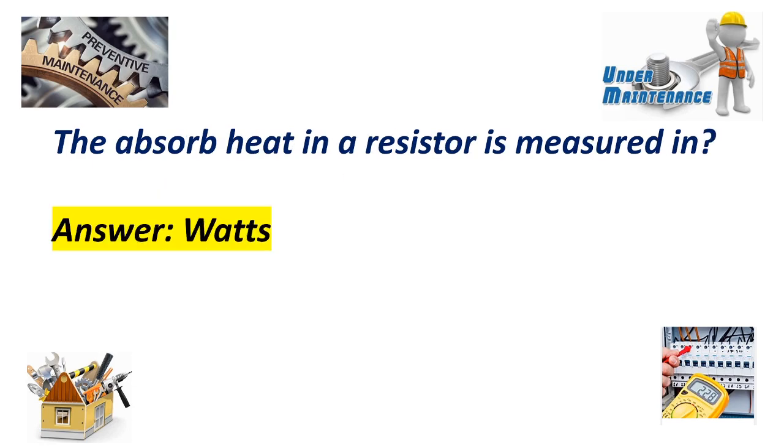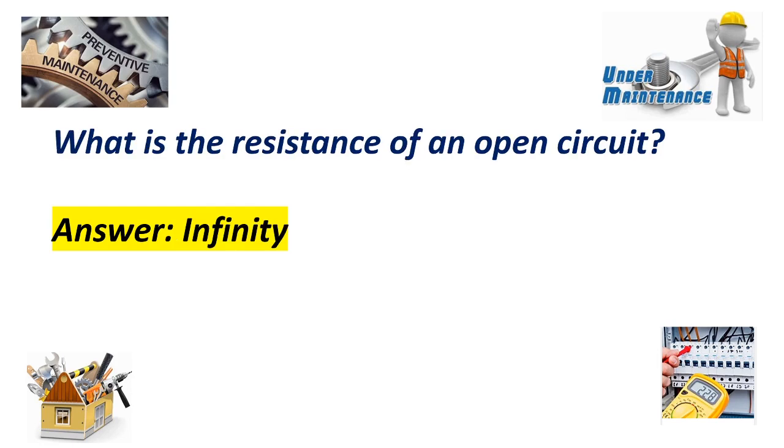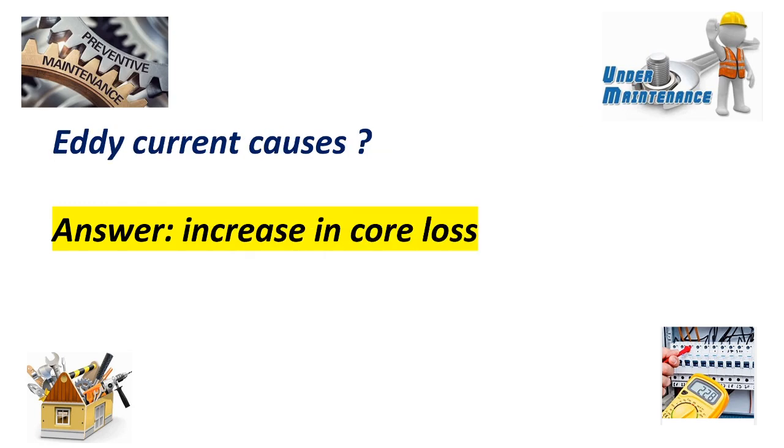The absorbed heat in a resistor is measured in? Answer: Watts. What is the resistance of an open circuit? Answer: Infinity. Eddy current causes increase in core loss.